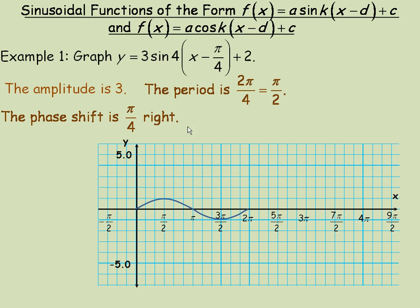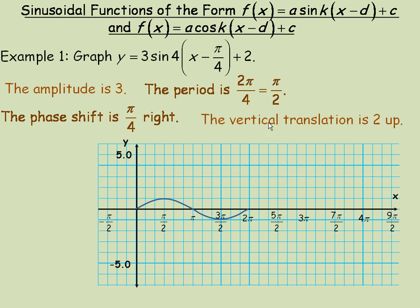The π/4 value represents a phase shift or horizontal translation to the right. Since it says x minus π/4, the phase shift goes to the right. If it were a plus sign, you'd think of it as subtracting a negative, meaning it would go to the left. The vertical translation is +2, so the entire function goes up 2 units — as if the x-axis has been shifted up 2 units.